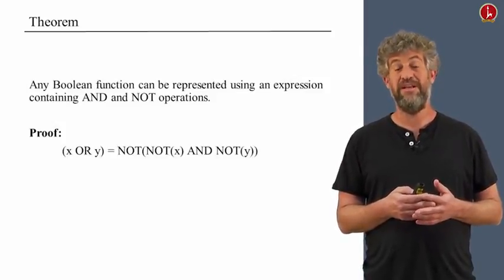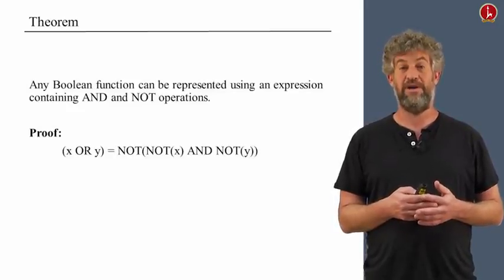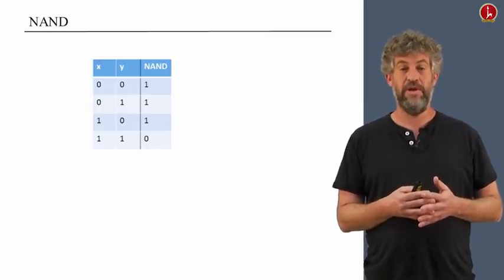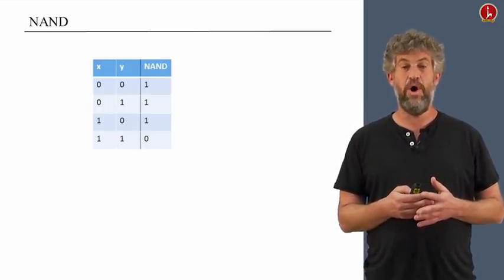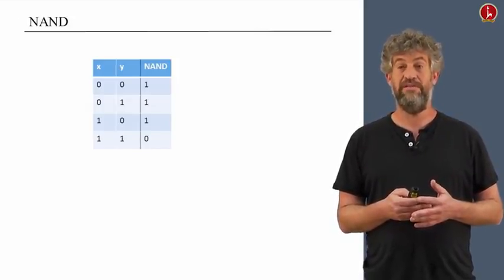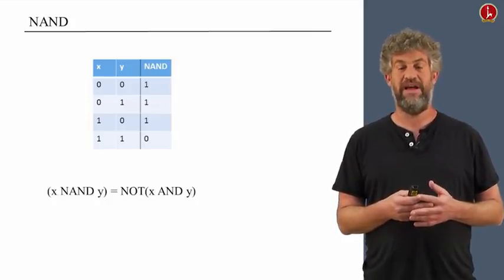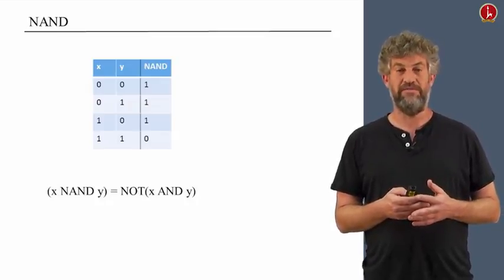But it turns out that there is yet another operation that by itself does suffice to actually compute everything, so let me introduce the NAND function. So the NAND function, here is a truth table. It gives zero only if both of its inputs are one, and every other possibility it gives one. Logically, x NAND y is defined to be the negation of x AND y. So what's so remarkable about this Boolean function?